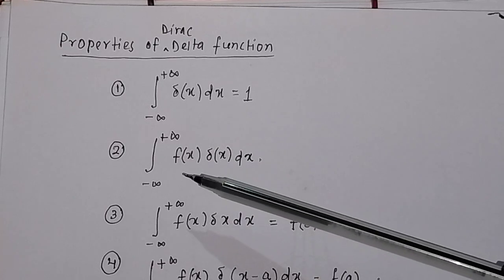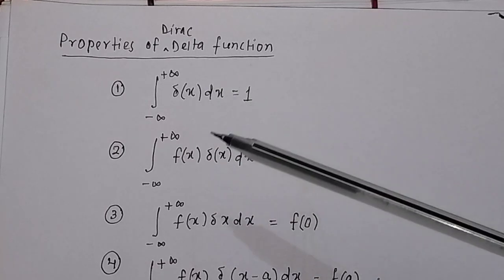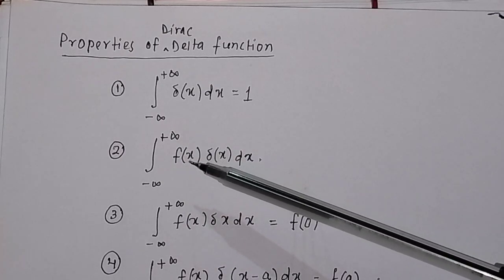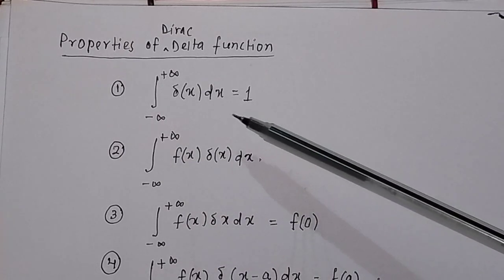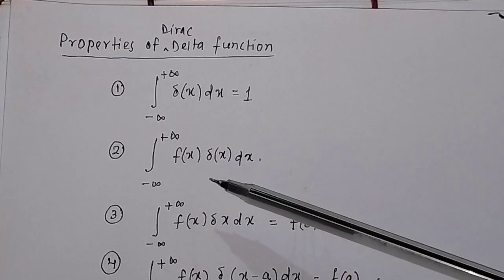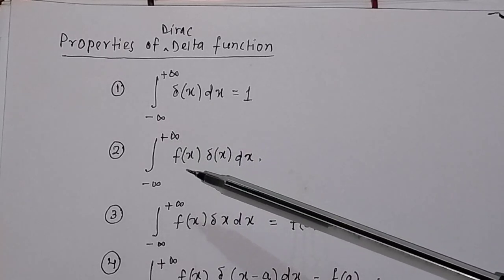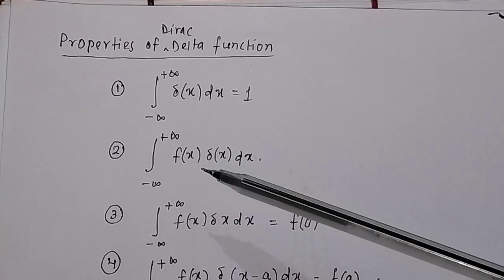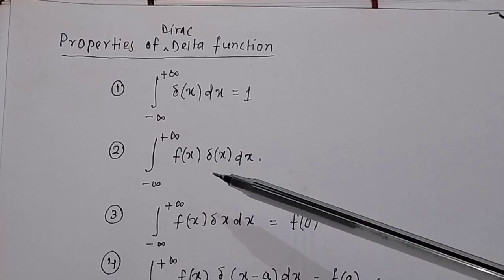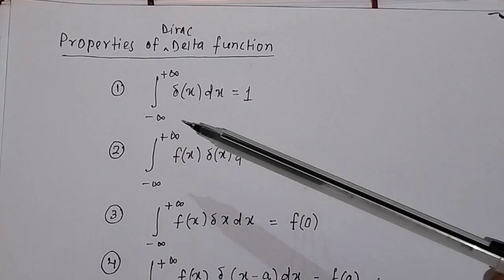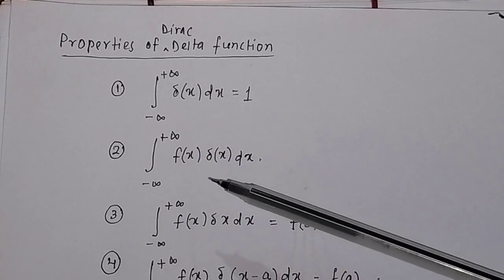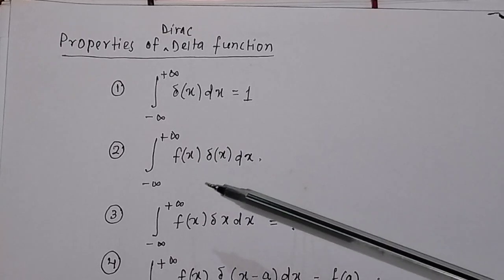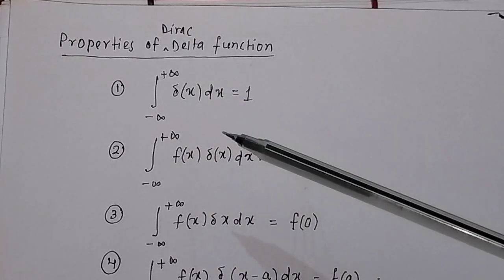The second property introduces another function f(x) into the Dirac delta function. The integration from −∞ to +∞ of f(x) δ(x) dx is called the identity of the Dirac delta function.